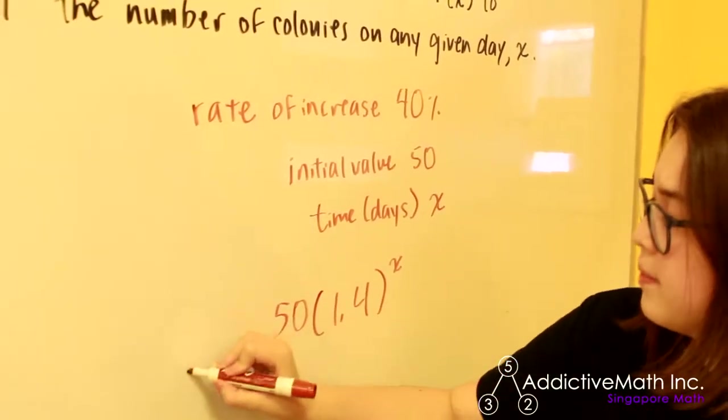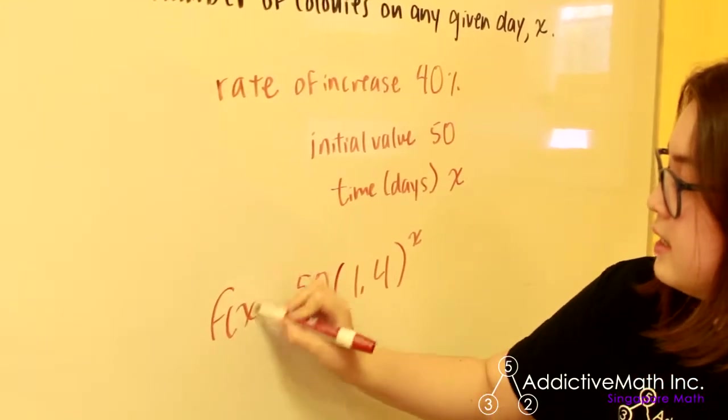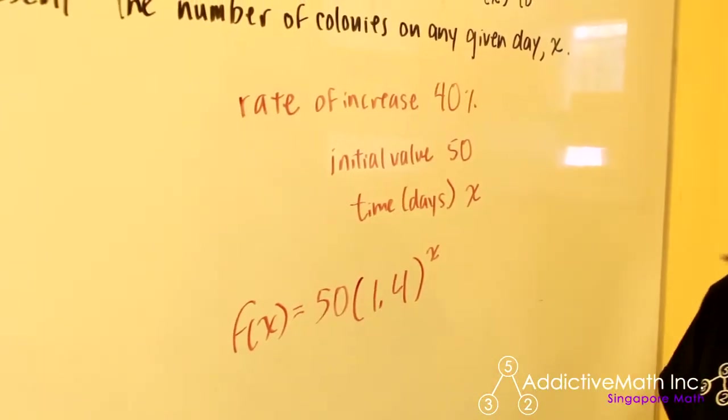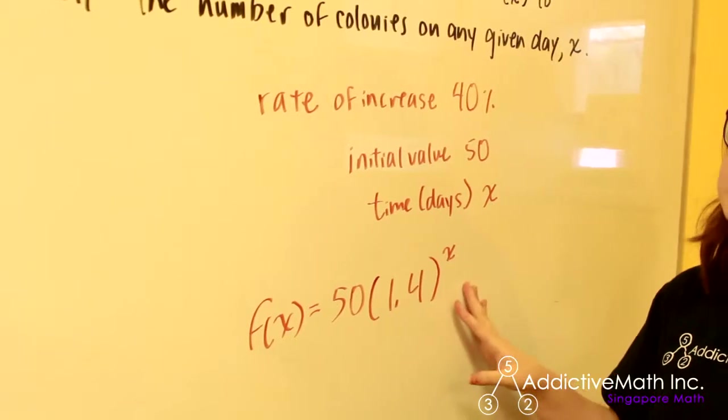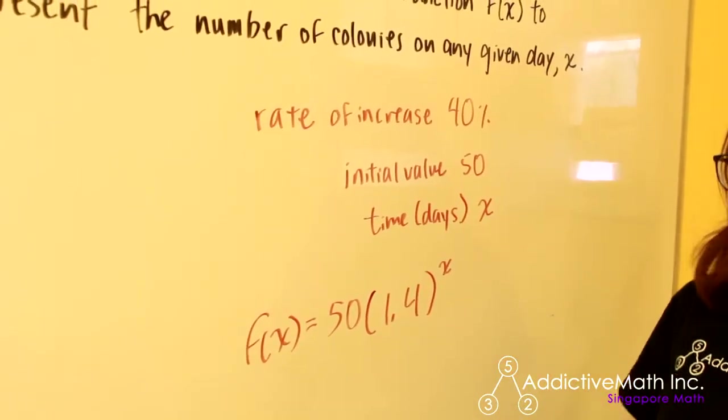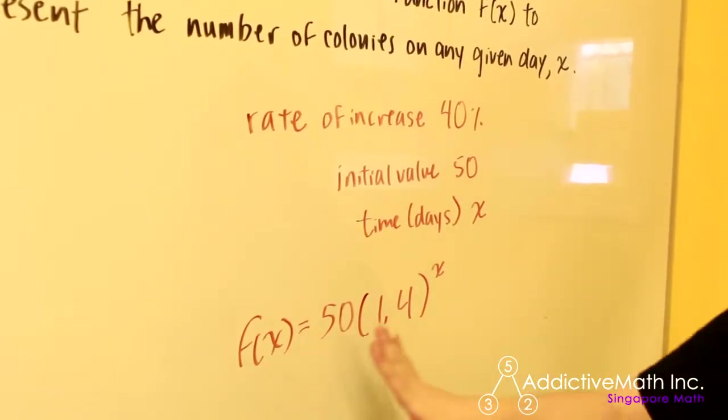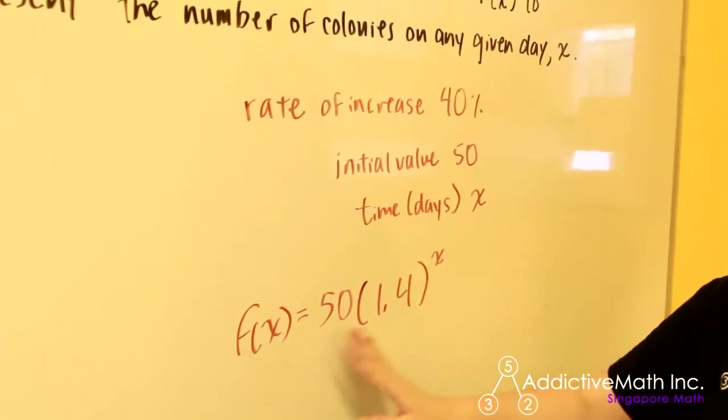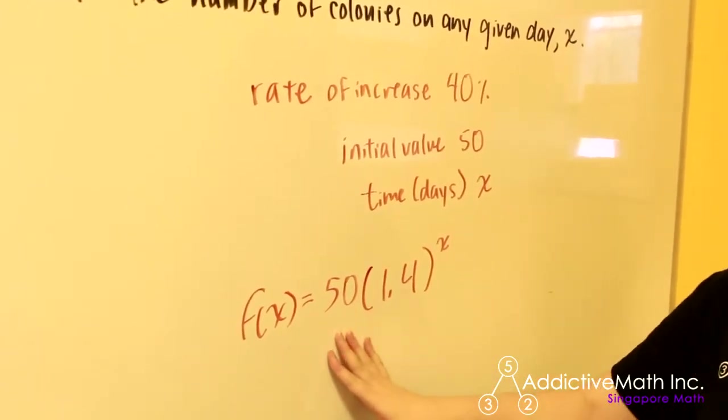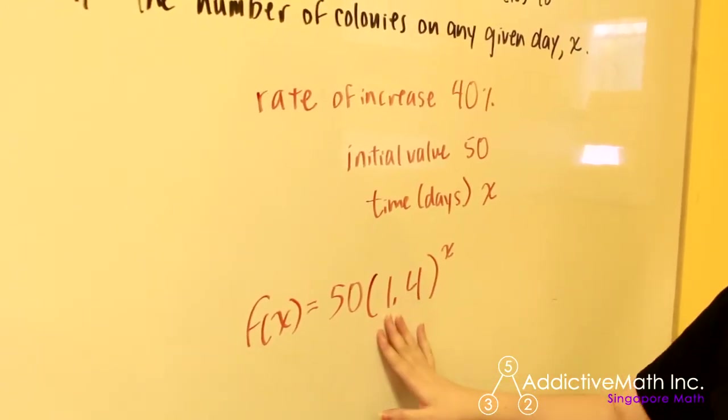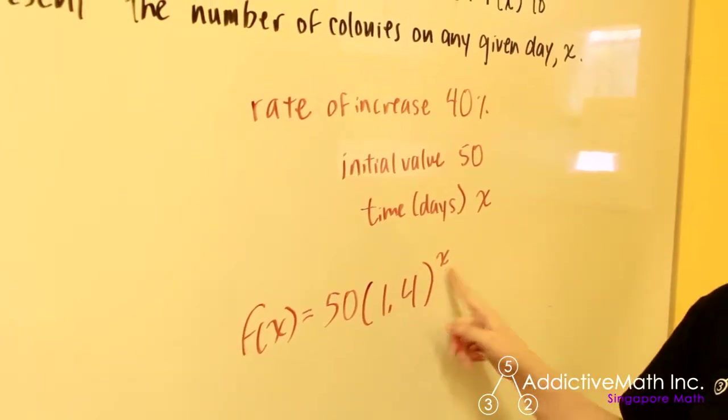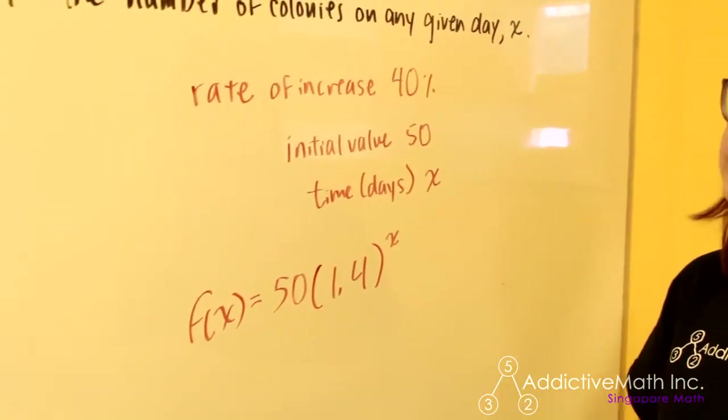So to recap, in this case, they asked us to write a function and we wrote out an exponential function because that is how we represent population. And our function f(x) is equal to 50, our initial value, times the rate to the x power. And that is our function for this problem.